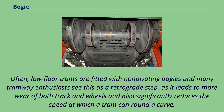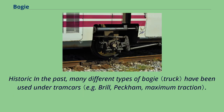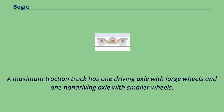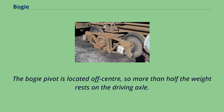Often, low-floor trams are fitted with non-pivoting bogeys, and many tramway enthusiasts see this as a retrograde step, as it leads to more wear of both track and wheels and significantly reduces the speed at which a tram can round a curve. Historically, many different types of bogey have been used under tramcars. A maximum traction truck has one driving axle with large wheels and one non-driving axle with smaller wheels, with the bogey pivot located off-center so more than half the weight rests on the driving axle.